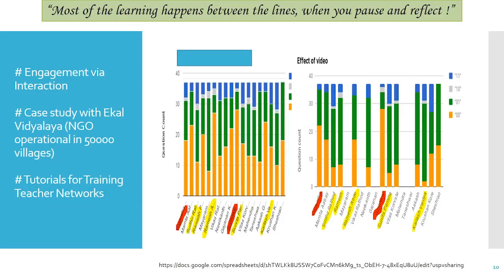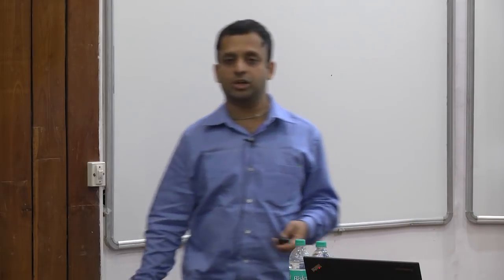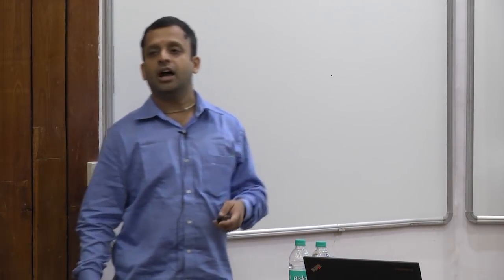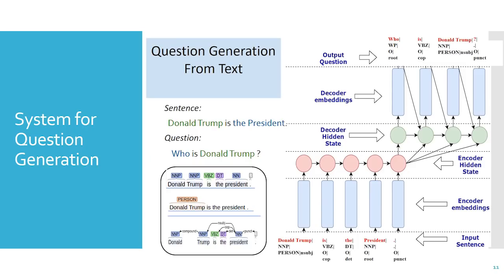There are some gray bars representing questions they couldn't attempt at all, even after watching the tutorial. So we decided to see if we can generate questions automatically — can we create this quizzing feature through AI? Here's our system: given a sentence, we try to detect the most promising entity from the sentence that could be questioned, on which a question could be framed. This is all based on deep learning, and then we have a decoder through which we generate the question.